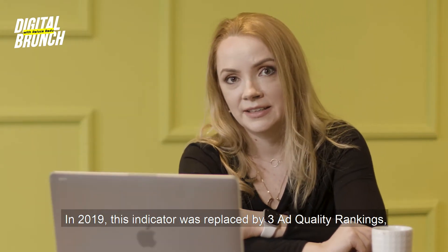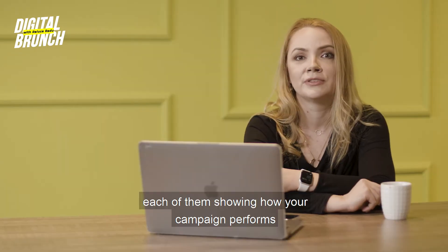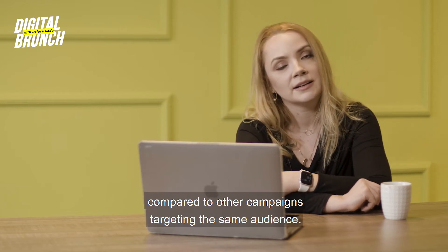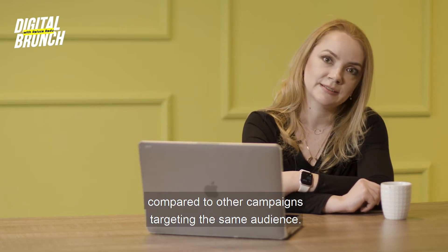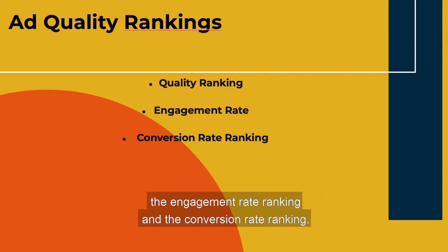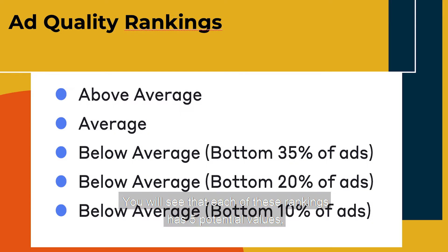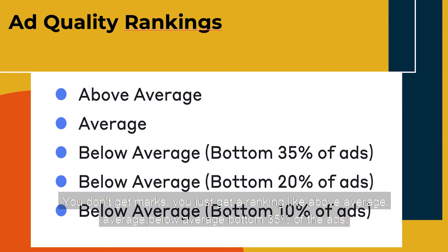In 2019, this indicator was replaced by three ad quality rankings, each of them showing how your campaign performs compared to other campaigns targeting the same audience. We have three ad quality rankings: the quality ranking of the ad, the engagement rate ranking, and the conversion rate ranking. Each of these rankings has five potential grades that you can receive.